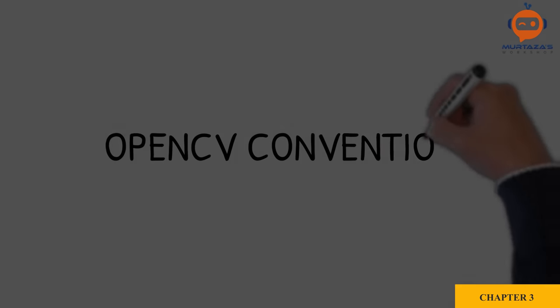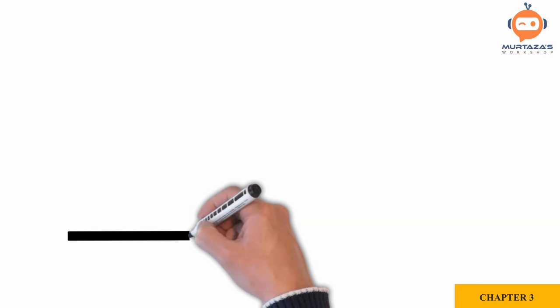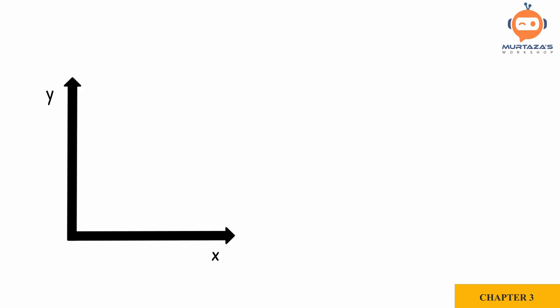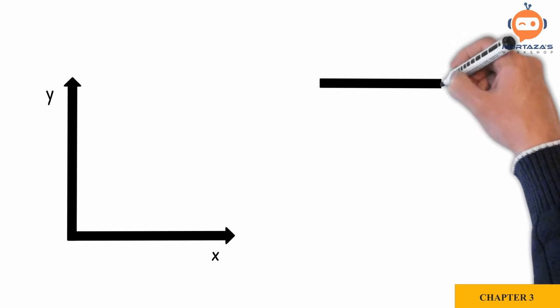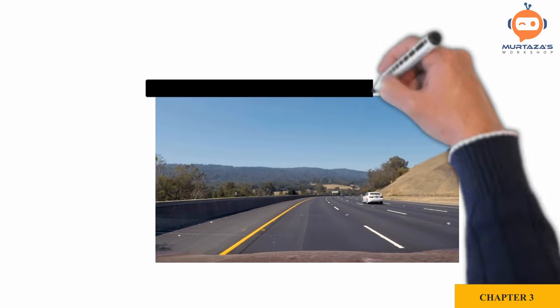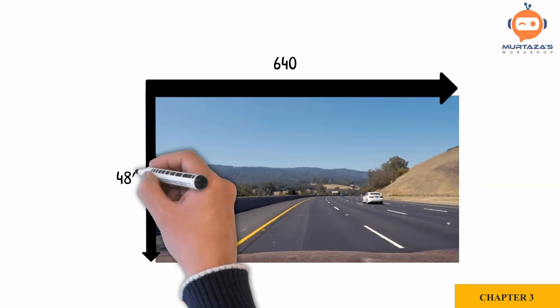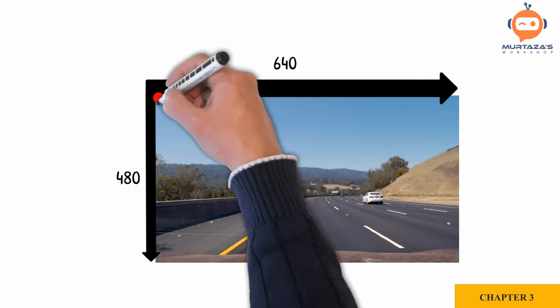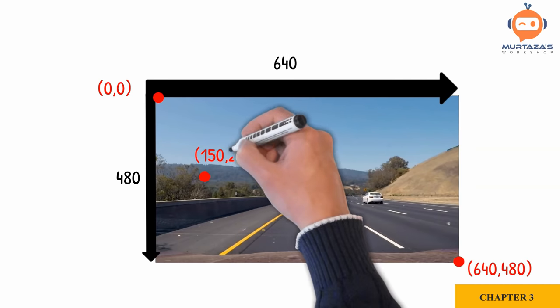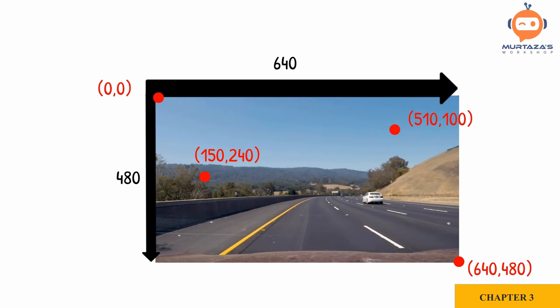Let's have a look at the OpenCV convention. In mathematics, the positive x-axis is towards east and the positive y-axis is towards north. In OpenCV, the x-axis is the same, but the positive y-axis is towards the south. Given that an image is 640 by 480, the origin is at the top-left, and the maximum width and height would be at the bottom-right.